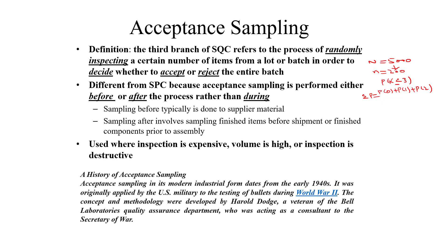If the number of defectives exceeds 3, we reject the lot. This is called the acceptance sampling technique — we decide whether to accept or reject a lot. It differs from statistical process control because acceptance sampling is performed either before or after the process, rather than during. For example, with a lot of 5,000 mobile phones, you decide before or after production whether to buy or not.